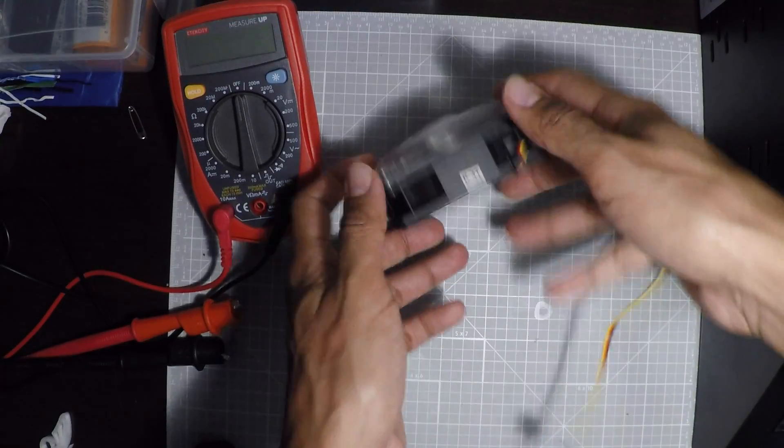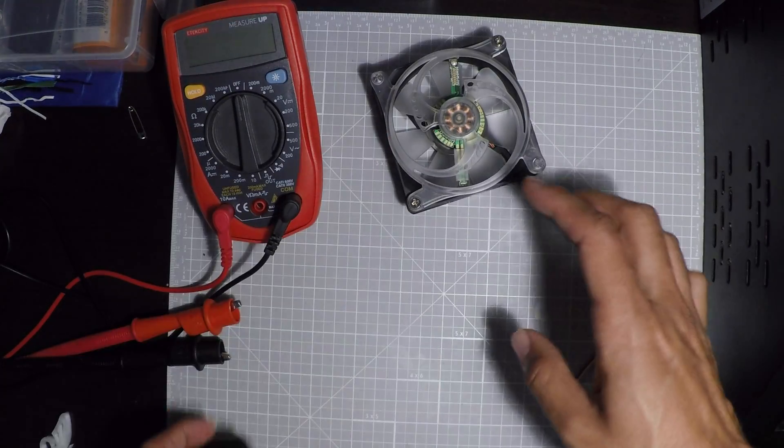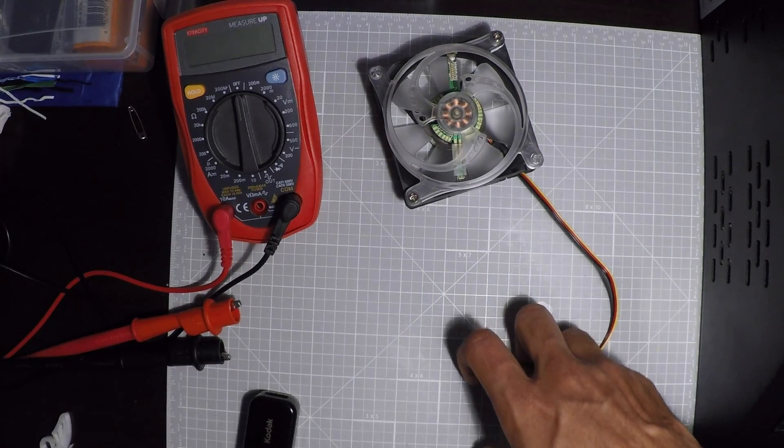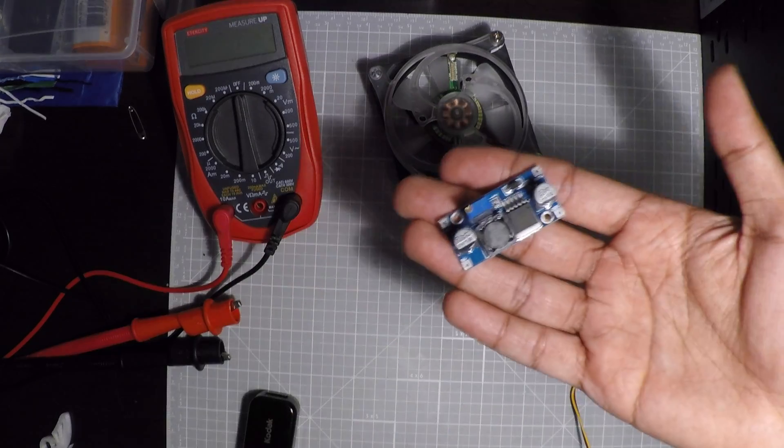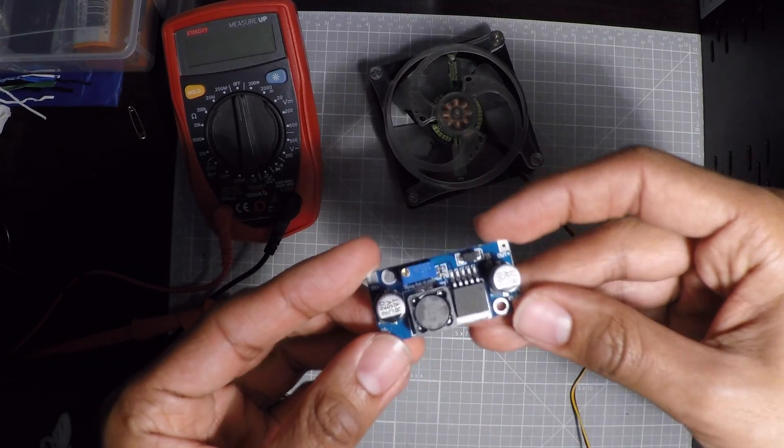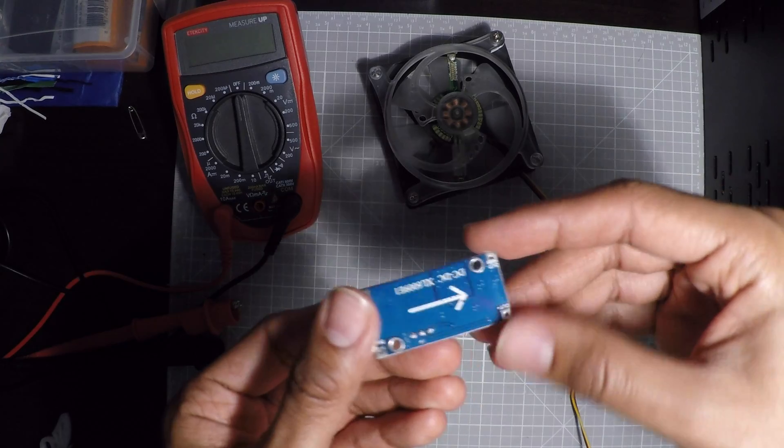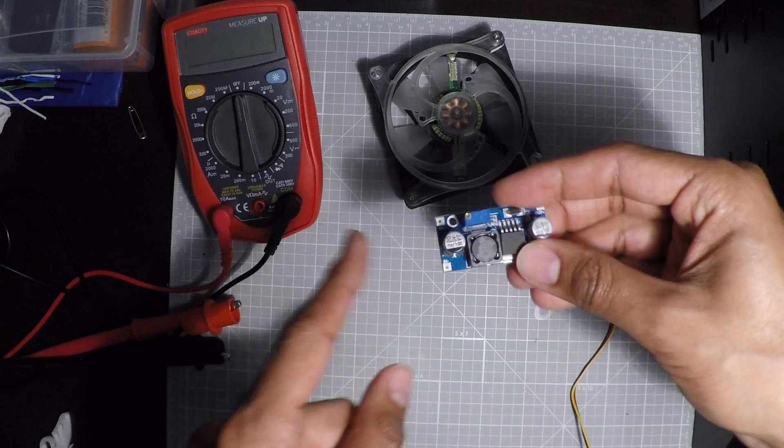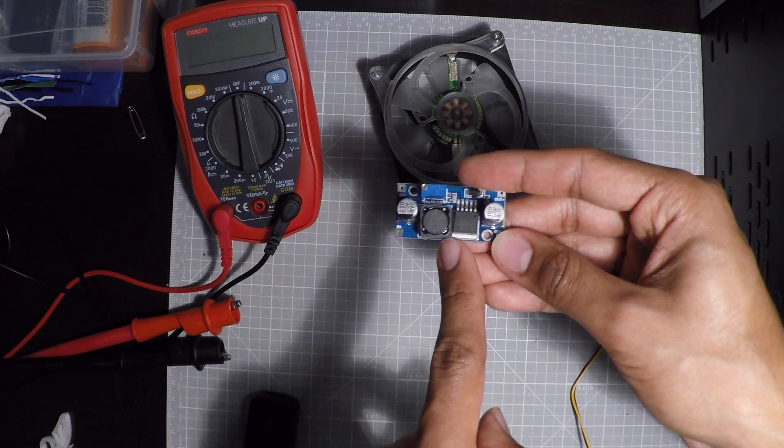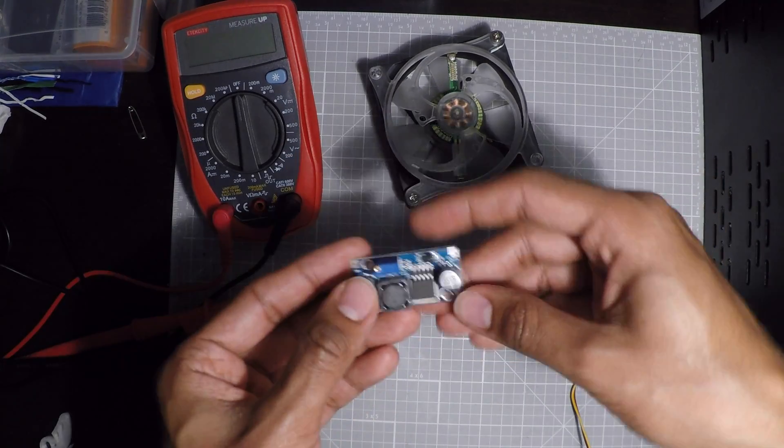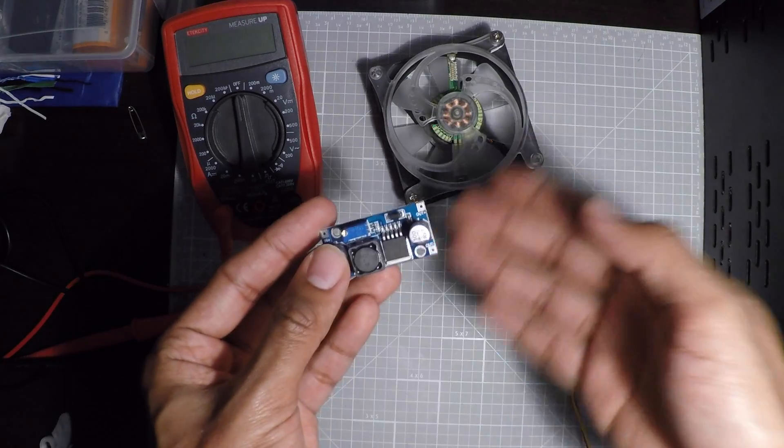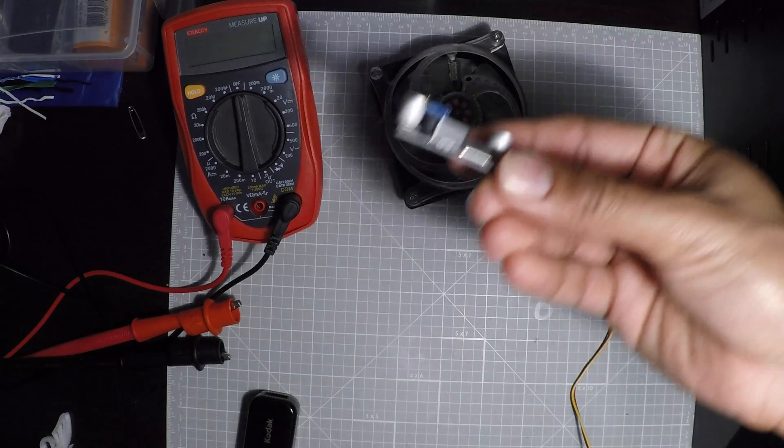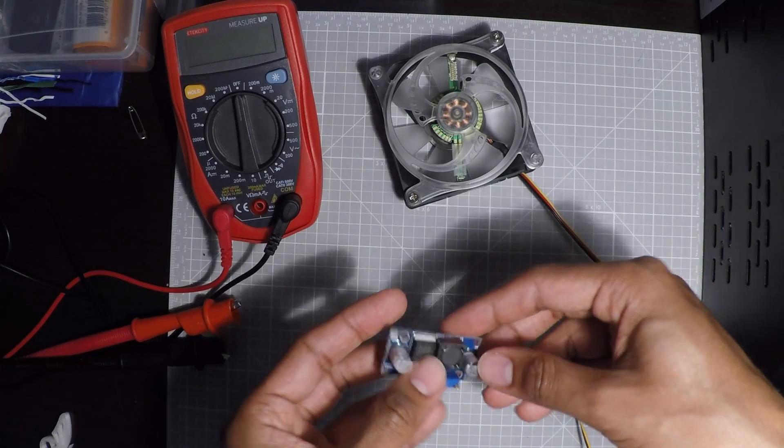To power a 12 volt fan with a 5 volt supply, we're going to need one of these boost converters. I got this off Amazon for about 4 bucks. What it does is take a voltage in and boost it up to whatever voltage you want, anywhere between 4 and 30 volts for this particular model.